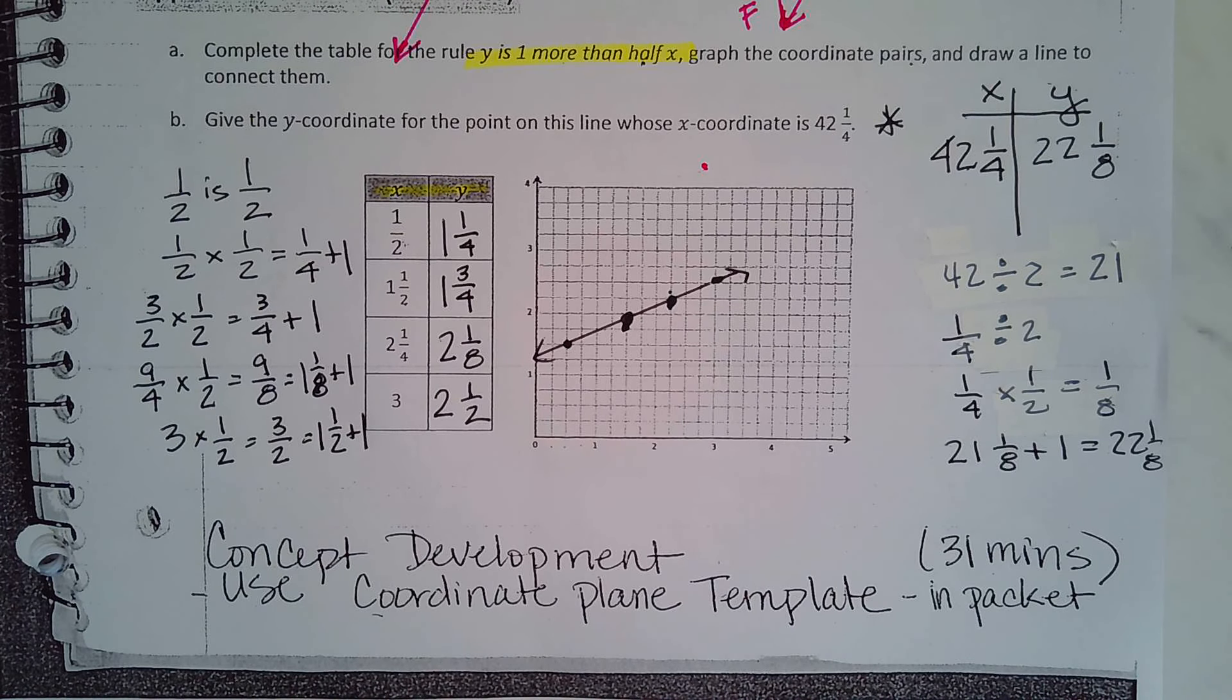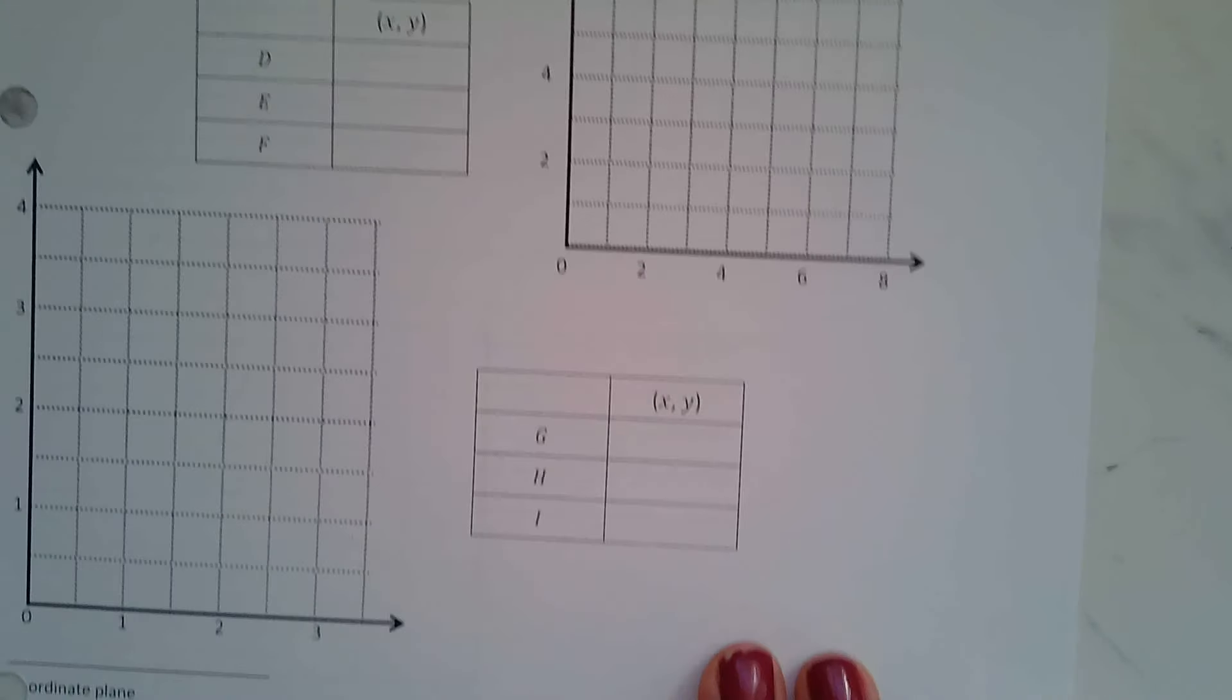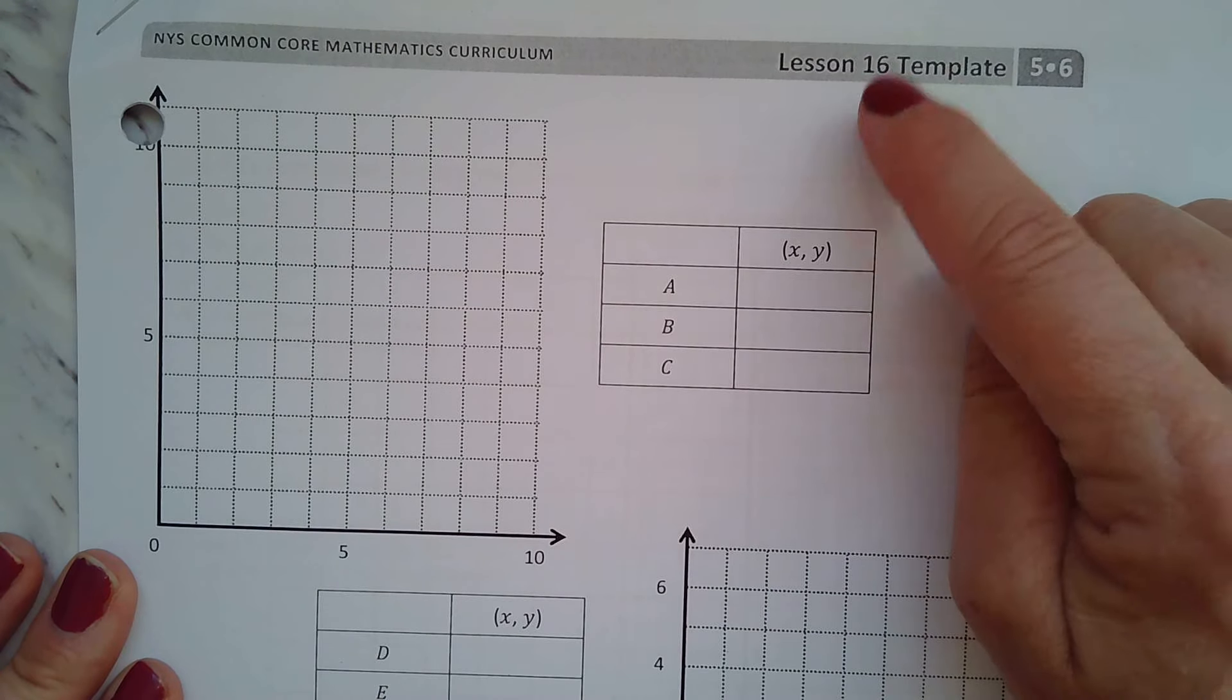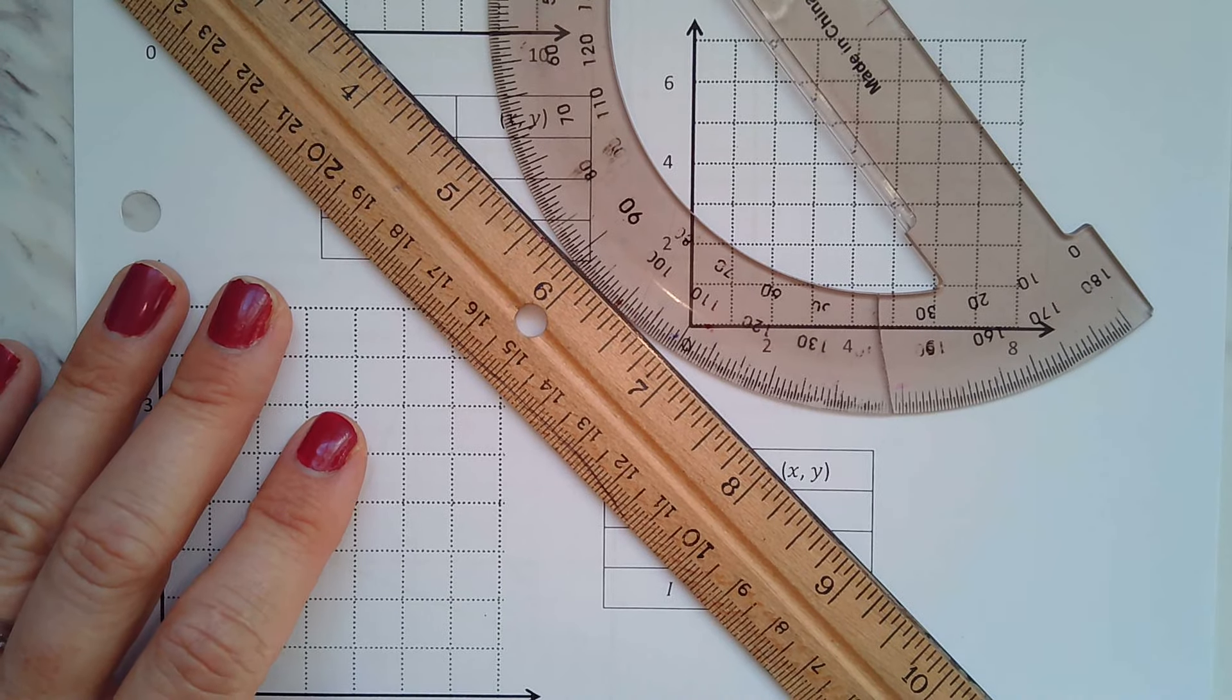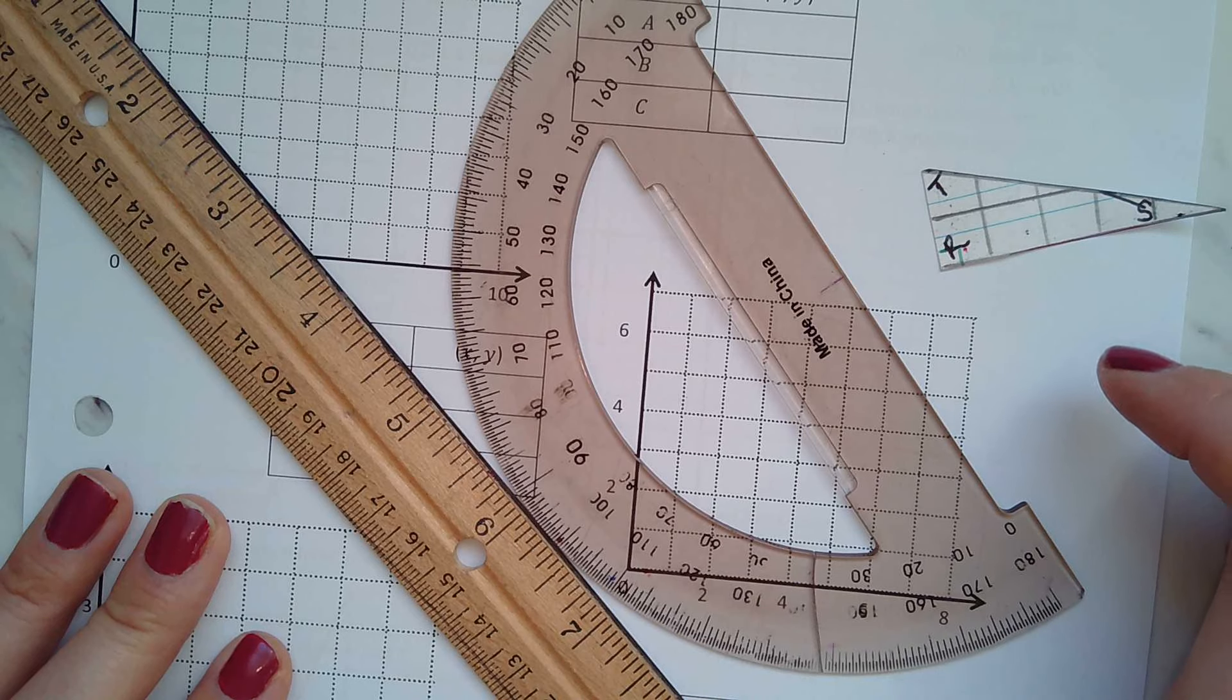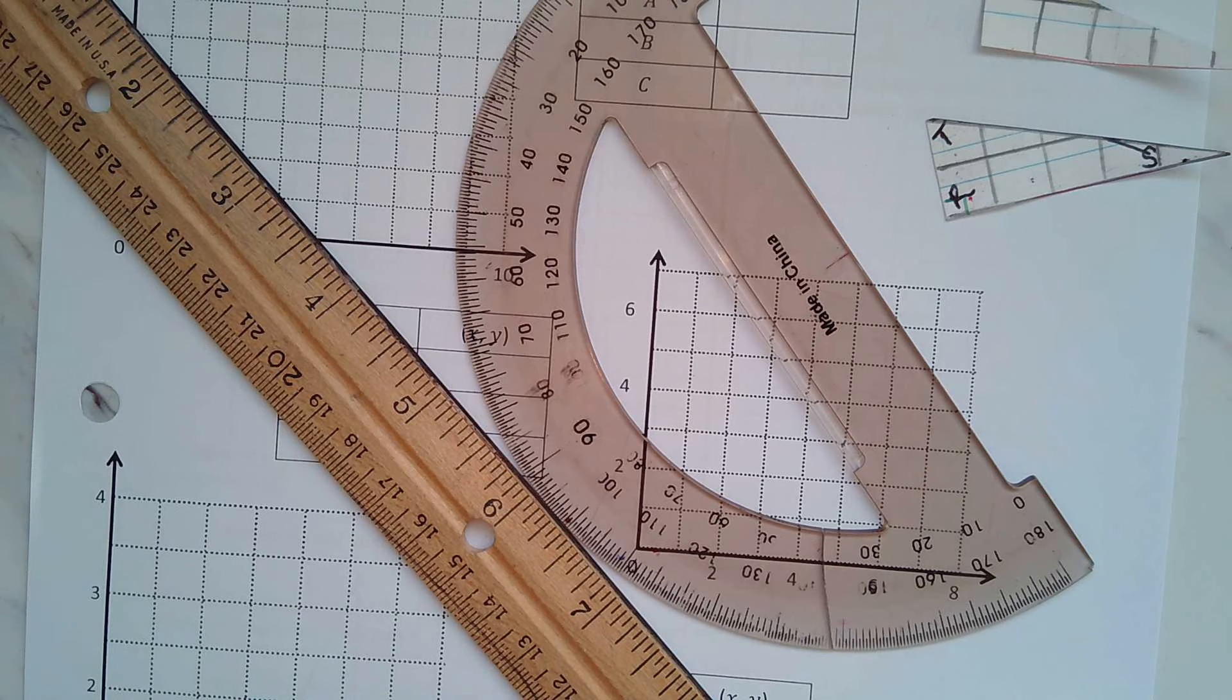Alright, this will do it for our fluency for module 6 lesson 16. When you come back, make sure to have your problem set packet with module 6 lesson 16 template, it's page 256. You're going to want some tools when you come back, even a straight edge, and then if you have out, if you have your triangle, your RST triangle, if you have this triangle and your other level triangle, you can pull those out as well. Alright, come on back for concept development.